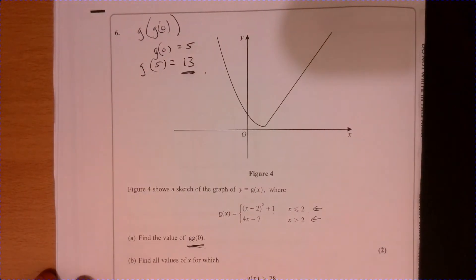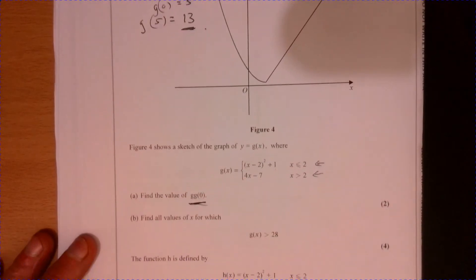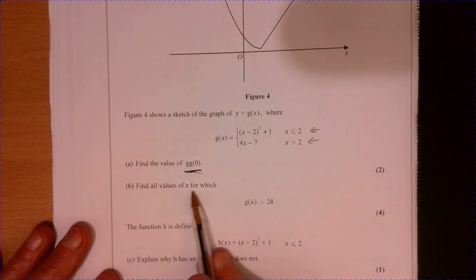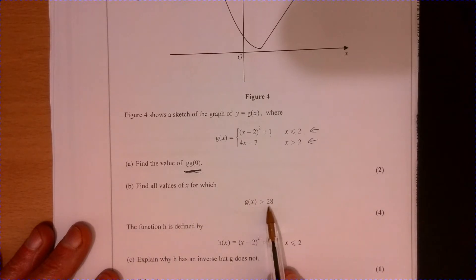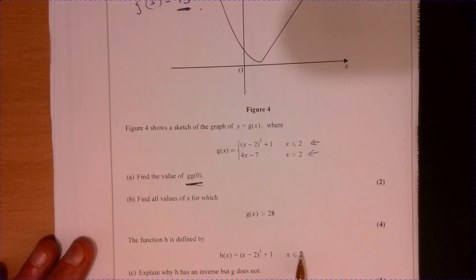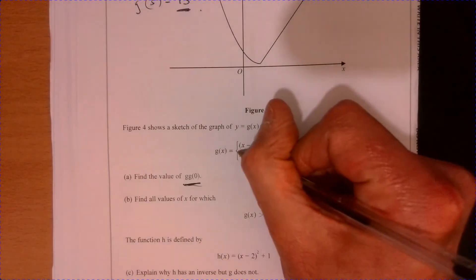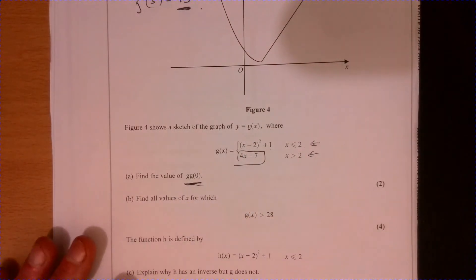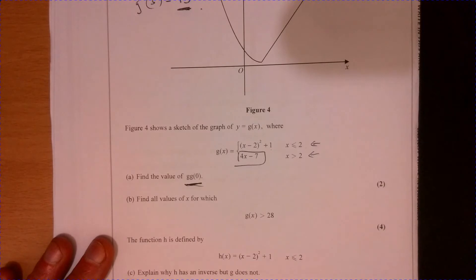Part B. I've got to do a little bit more work on part B. Well, it's four marks, isn't it? It says find all the values of x for which our function g is going to be more than 28. Well, let's do the easier bit first, right? So we'll look at when x is more than two. So let's do that first.